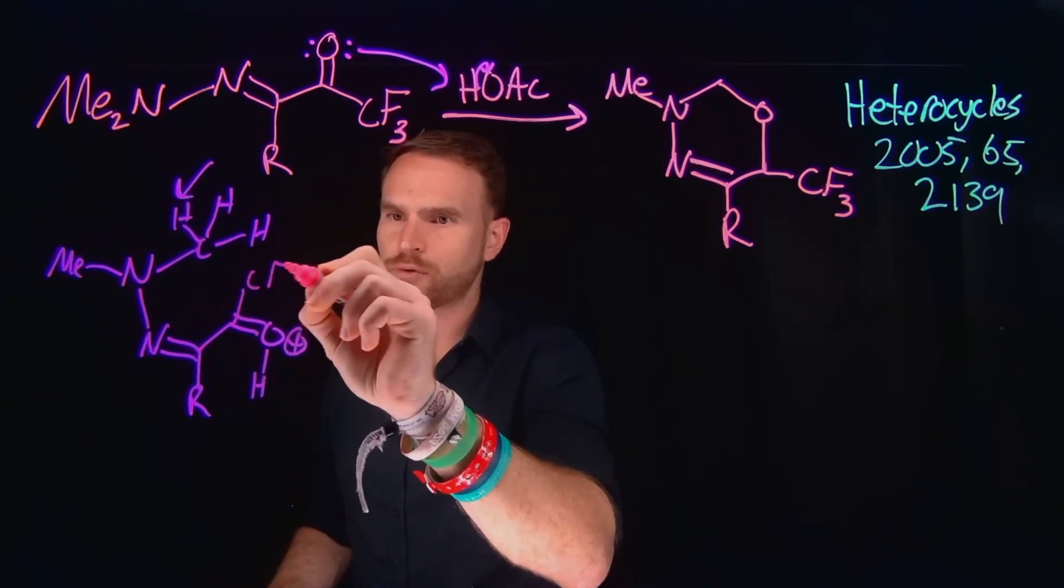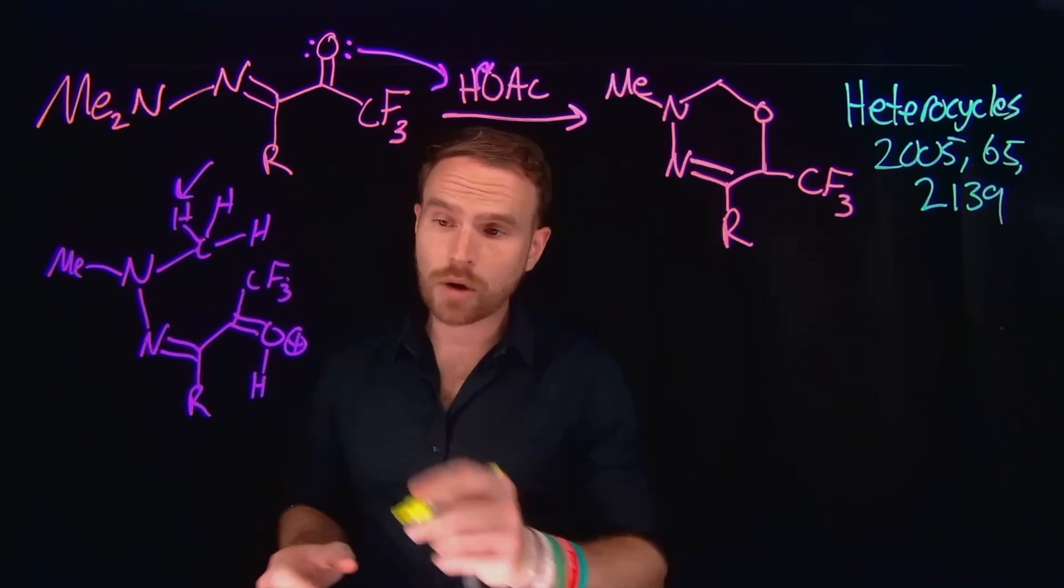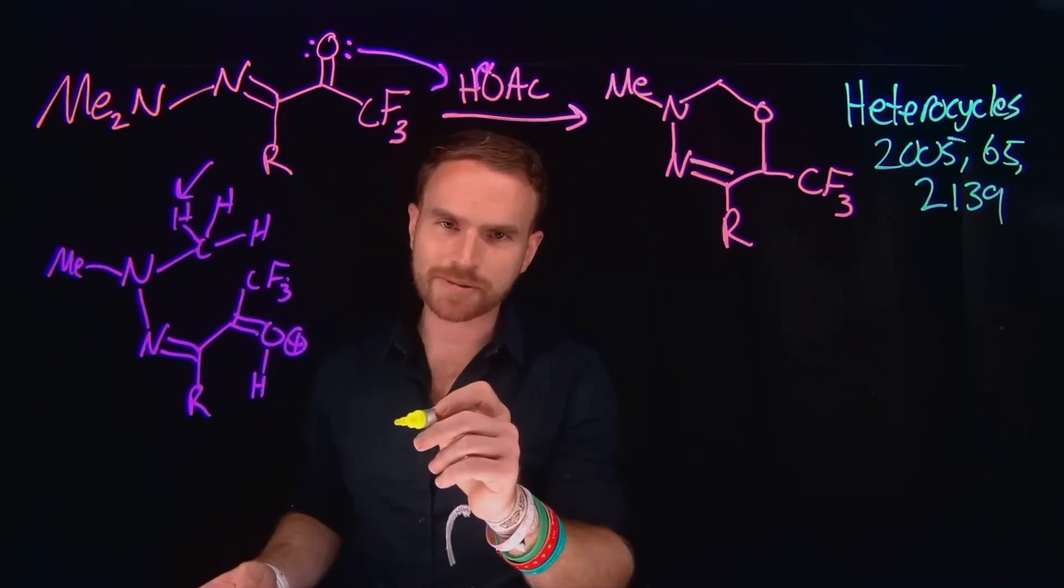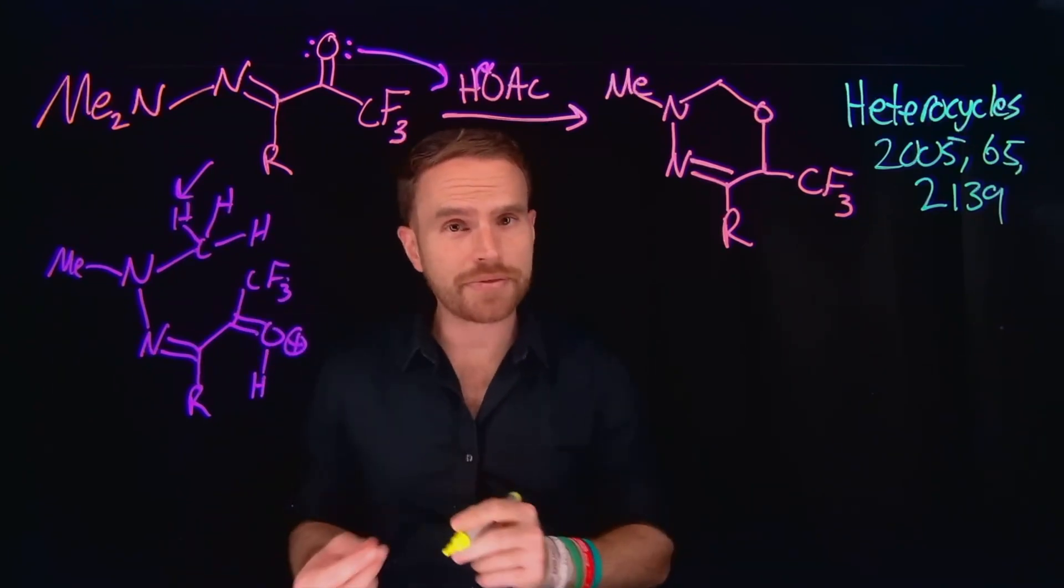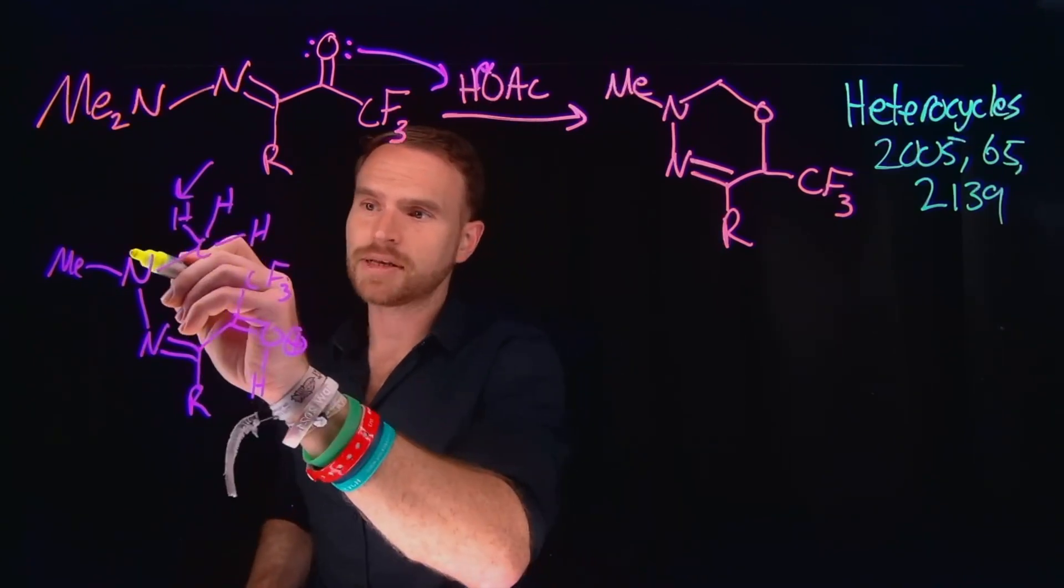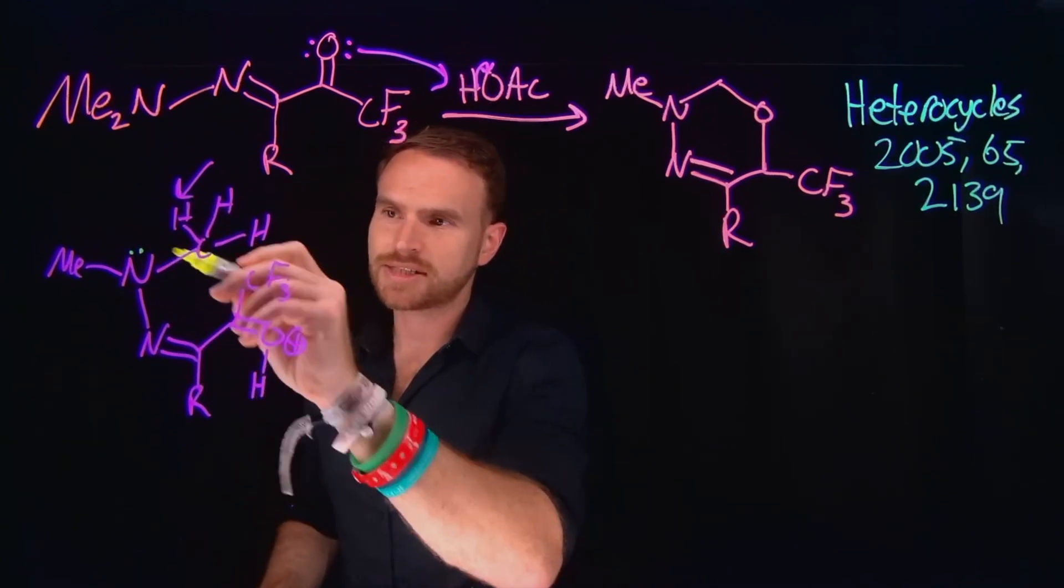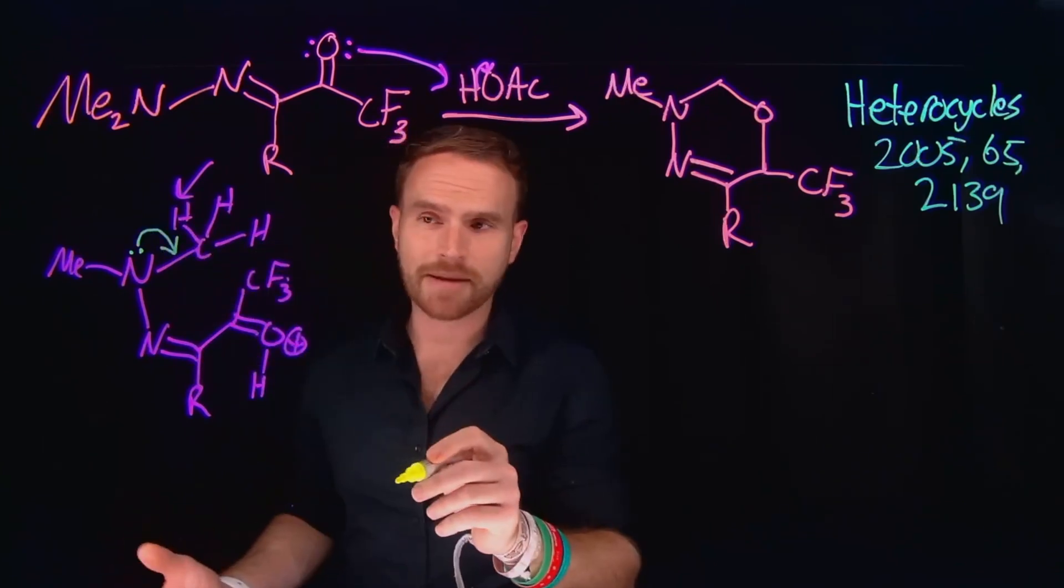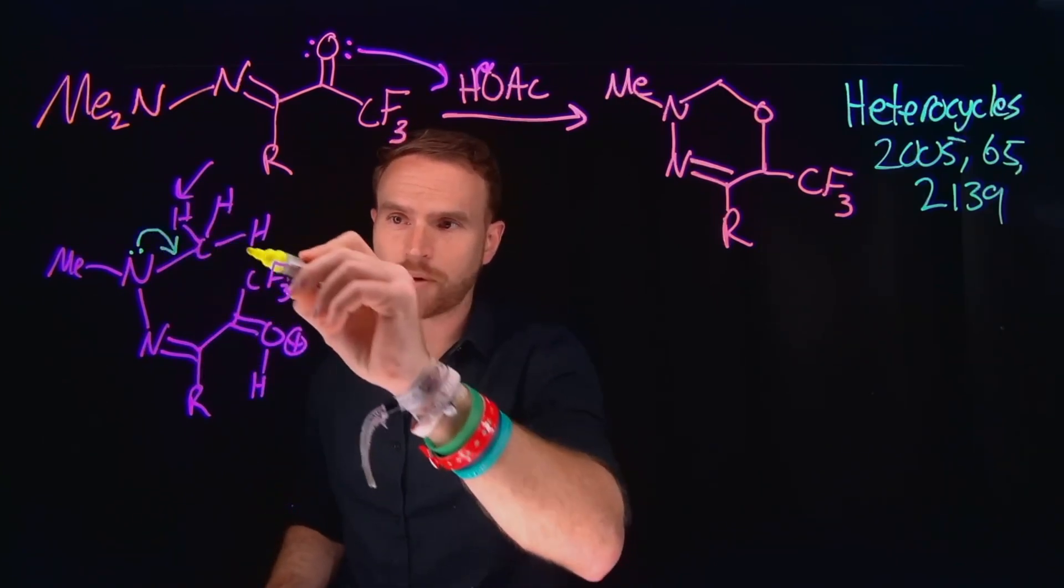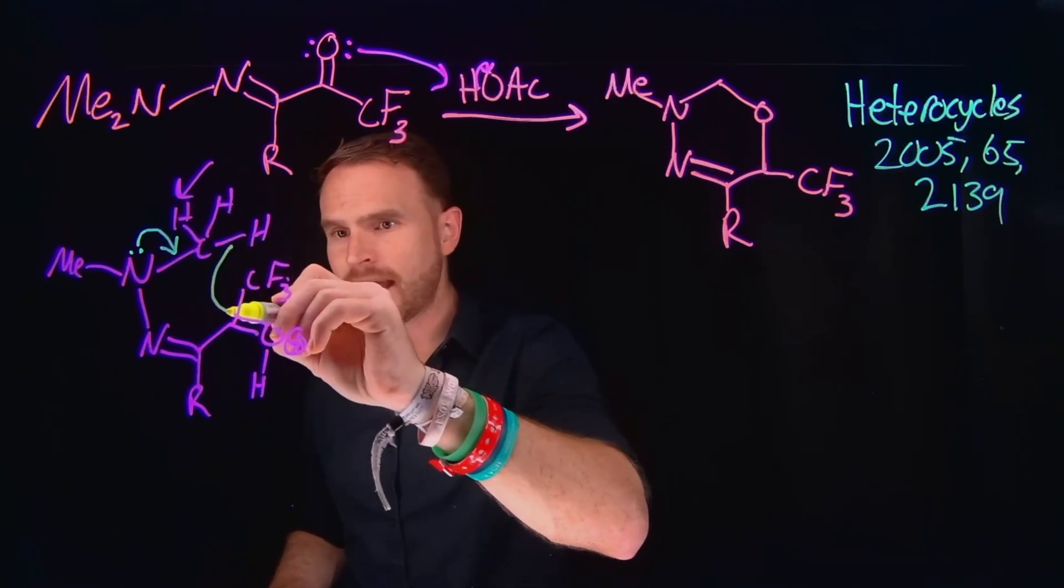And remember, what we've done by protonating that oxygen is make this position incredibly susceptible to nucleophilic attack, even by things that aren't generally considered to be strong nucleophiles. So what can actually happen is that this lone pair of electrons on this dimethylamine can actually come down to form an iminium ion.